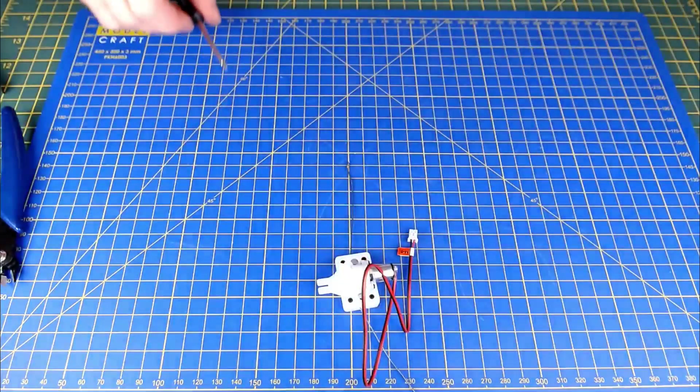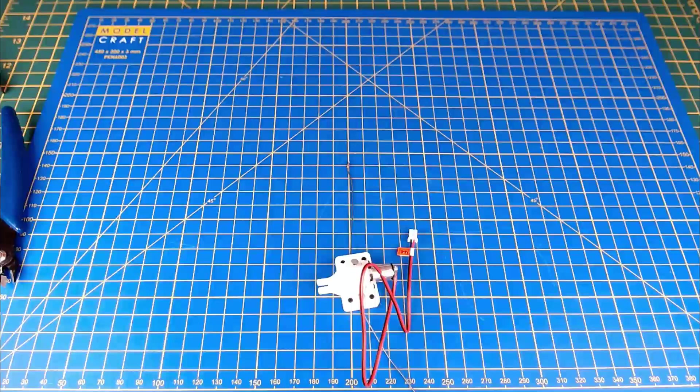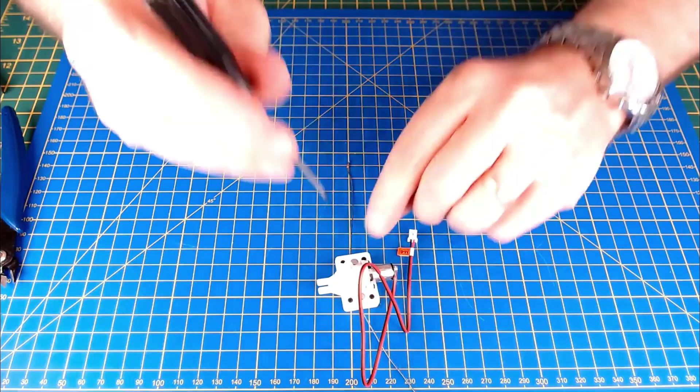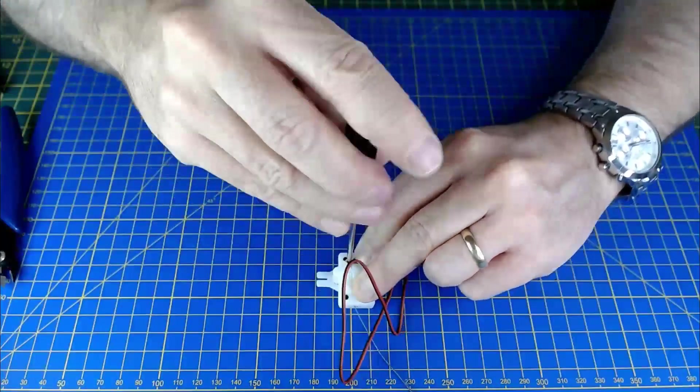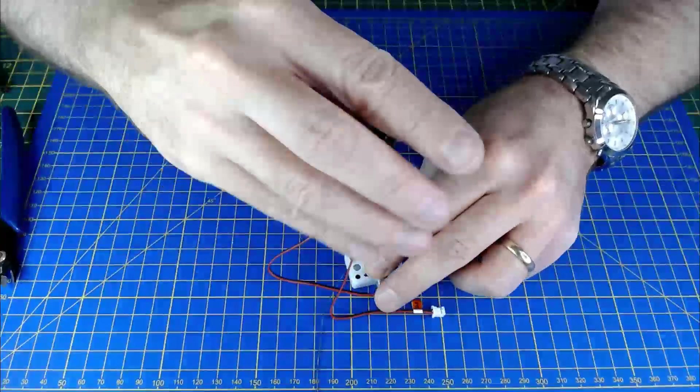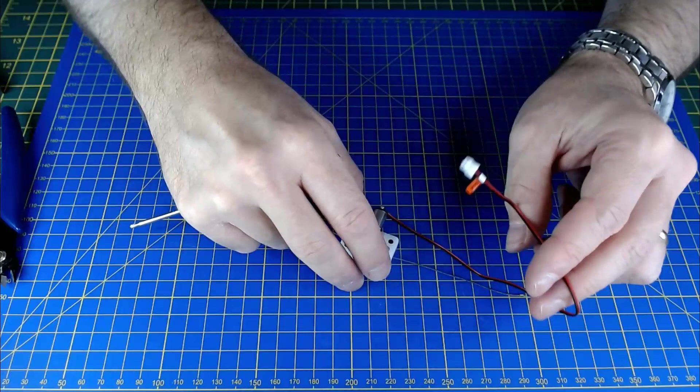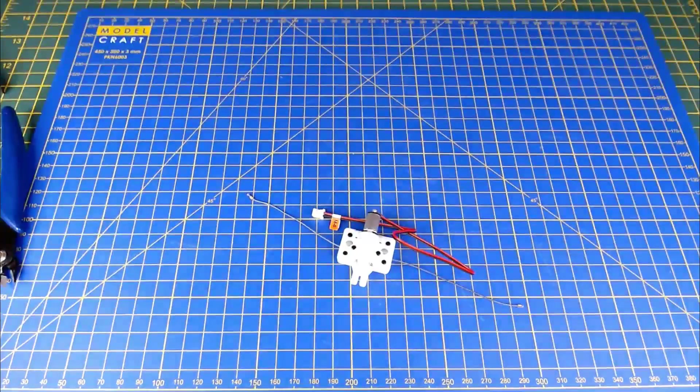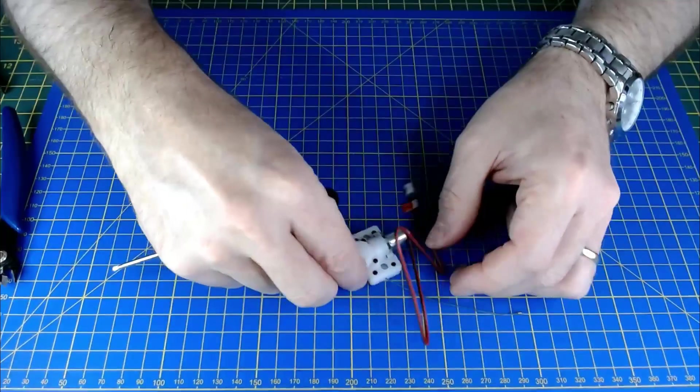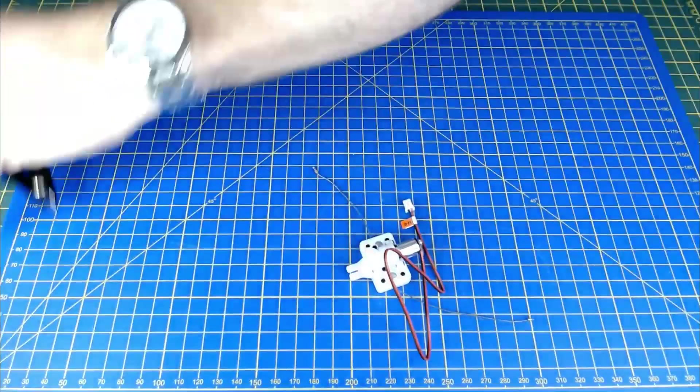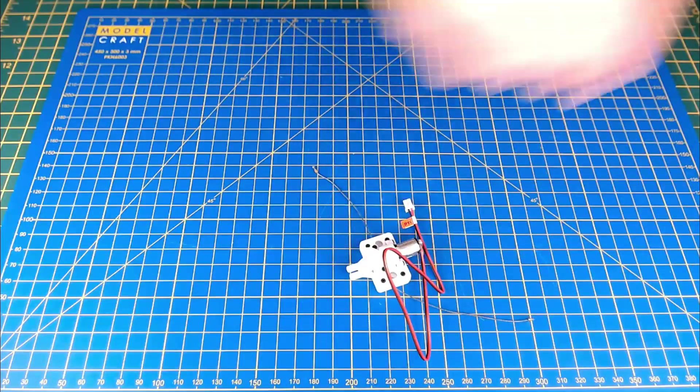And then two more of these, more screws. Okay. So that's the wing flap motor and gear in, etc., fitted.